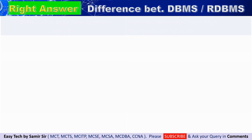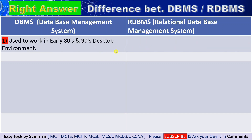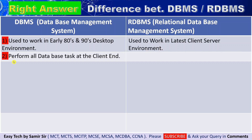Now, as you understand the wrong answers, let's get the right answer. As we all know, DBMS stands for Database Management System and RDBMS stands for Relational Database Management Systems. The first right answer: DBMS used to work in the early 1980s and 1990s in a desktop environment, whereas RDBMS works with the latest client-server environments. DBMS performs all database tasks at the client's end, whereas RDBMS performs all database tasks at the server end.